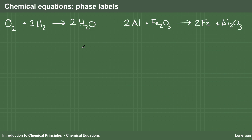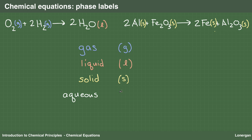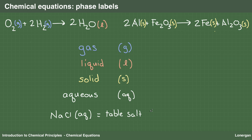There is one additional bit of information that is often seen in chemical equations: an indication of the phase of the chemical compound. For instance, in the reaction of H2 with O2, the fact that both are gases is indicated with the parenthetical (g). In the reaction of aluminum with iron oxide, the fact that they are solids is indicated with the parenthetical (s). The product of the reaction of H2 and O2 might initially be water in the gas phase, but if we wait for the reaction to cool down, we will have liquid water at room temperature, indicated with the parenthetical (l). Similarly, after the reaction between aluminum and iron oxide is allowed to cool, we will have solid iron and solid aluminum oxide. One final designation is (aq), for aqueous, used to indicate a chemical compound dissolved in water. For instance, NaCl (aq) means table salt dissolved in water.